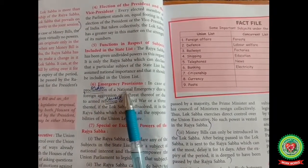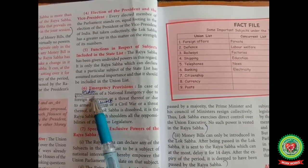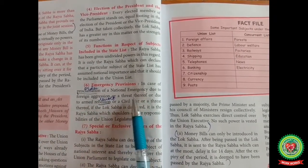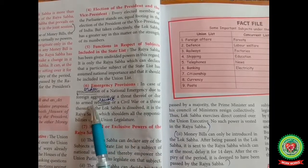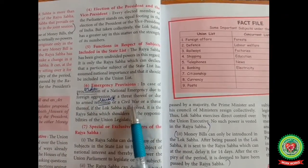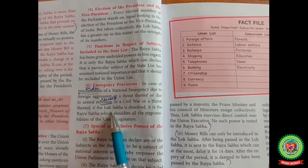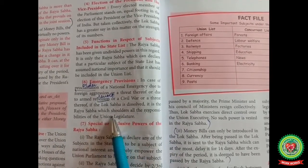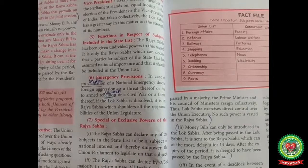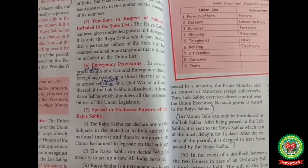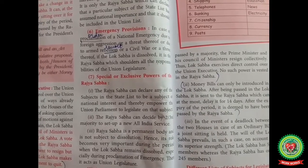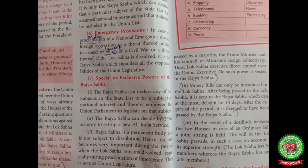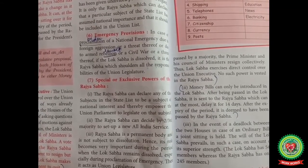Emergency provisions: In case of proclamation — meaning order — of a national emergency due to foreign aggression or a threat thereof, or due to armed rebellion — meaning revolt — or a civil war or a threat thereof, if the Lok Sabha is dissolved, it is the Rajya Sabha which shoulders all the responsibilities of the union legislature, as it is a permanent house.